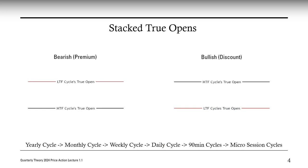Now I'll be introducing stacked true opens. Most of you know what premium and discount means in regards to price. Now I'm going to share what is premium and discount in regards to time. In bearish markets, you will have stacked true opens — which is a lower timeframe cycle's true open above a higher timeframe cycle's true open. In bearish markets, when price is above a lower timeframe cycle's true open, which is already above a higher timeframe cycle's true open, that's when you should look to go short. If you're just looking at one true open, you're doing it wrong. You need two true opens.